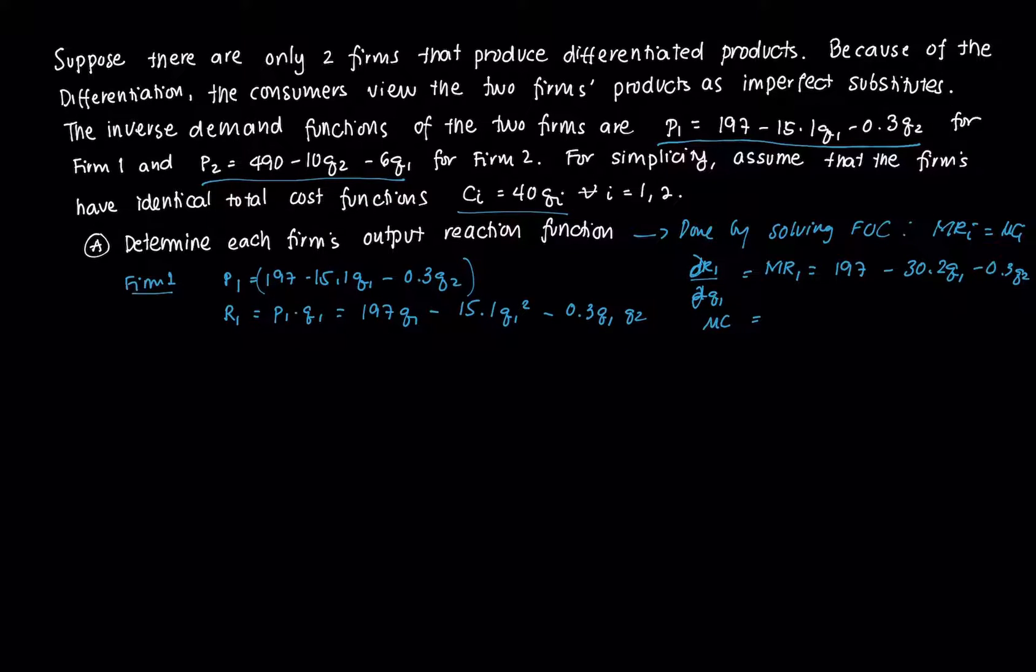The marginal cost is the derivative of the cost function with respect to Q1. The cost function is the same for each firm, so that's just 40. Therefore, if we do MR1 equals MC1, that's 197 minus 30.2Q1 minus 0.3Q2 equals 40.